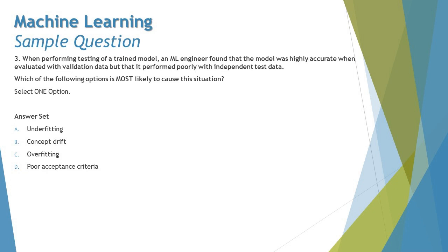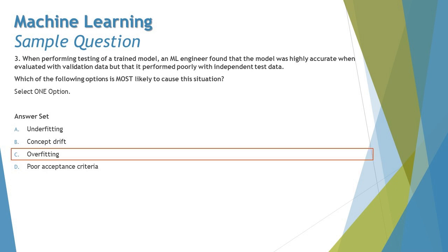Poor acceptance criteria relates to requirements and initialization — it should be consistent across different datasets, so it is unlikely to cause a difference between validation and independent test results. Overfitting, however, explains exactly this scenario: good performance on validation data but poor performance on independent test data. The system was overdosed with training data, making it unable to generalize. The right answer is C: overfitting.